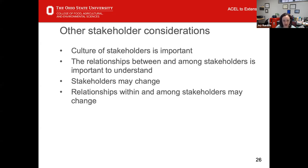Also, think about those relationships between and among stakeholders — if you have two stakeholders with diverging opinions on a particular issue, you're going to need to do more work as an evaluator to get them on the same page using conflict resolution skills. Keep an open mind and don't be committed or tied to your stakeholders because they might change. Just as with my grant, we thought the PI would be a stakeholder but that has really changed. The relationships within and among your stakeholders might change as well, so you will have to flex with that and stay on top of any developing conflicts or relationship changes.